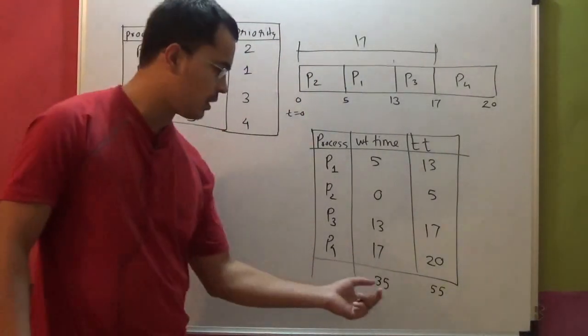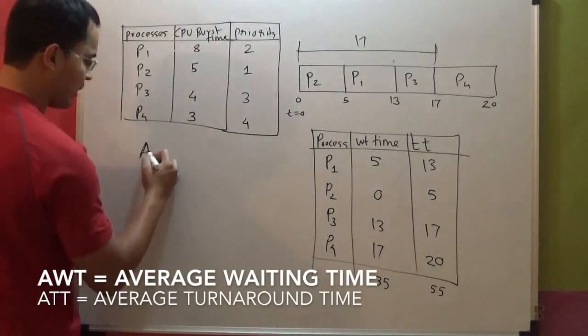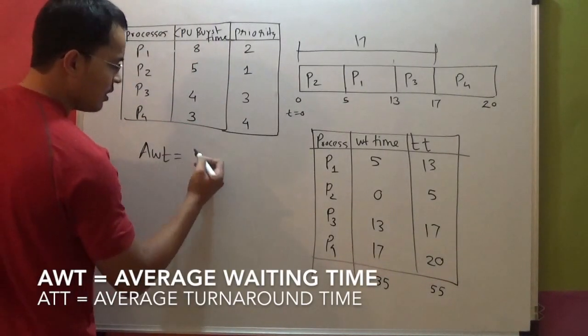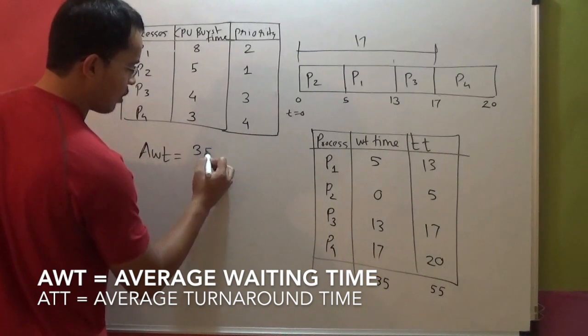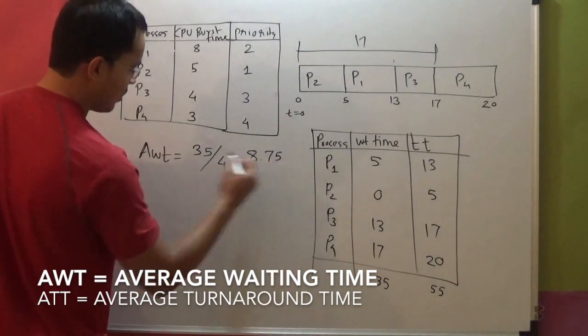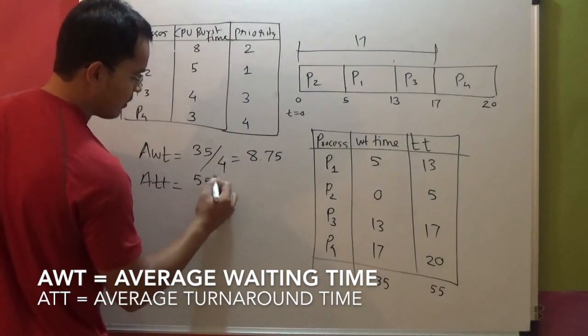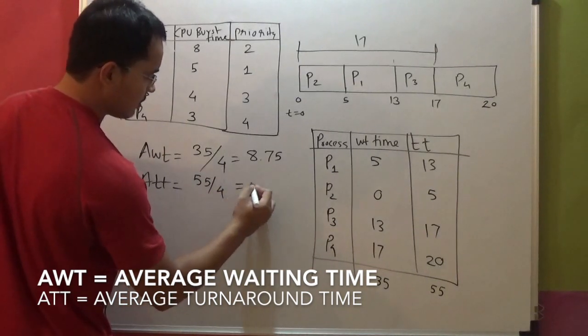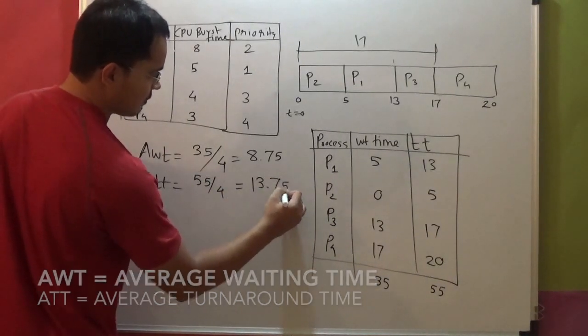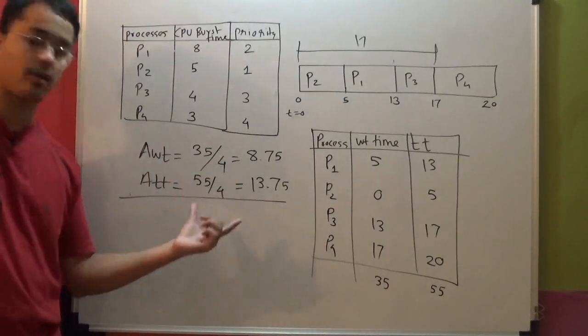Total of waiting time is 35. Total of turnaround time is 55. Average waiting time is equal to total waiting time divided by number of processes. Number of processes is 4, so 8.75. Average turnaround time is equal to total turnaround time that is 55, divided by 4, which is 13.75. So this is your average waiting time and average turnaround time.